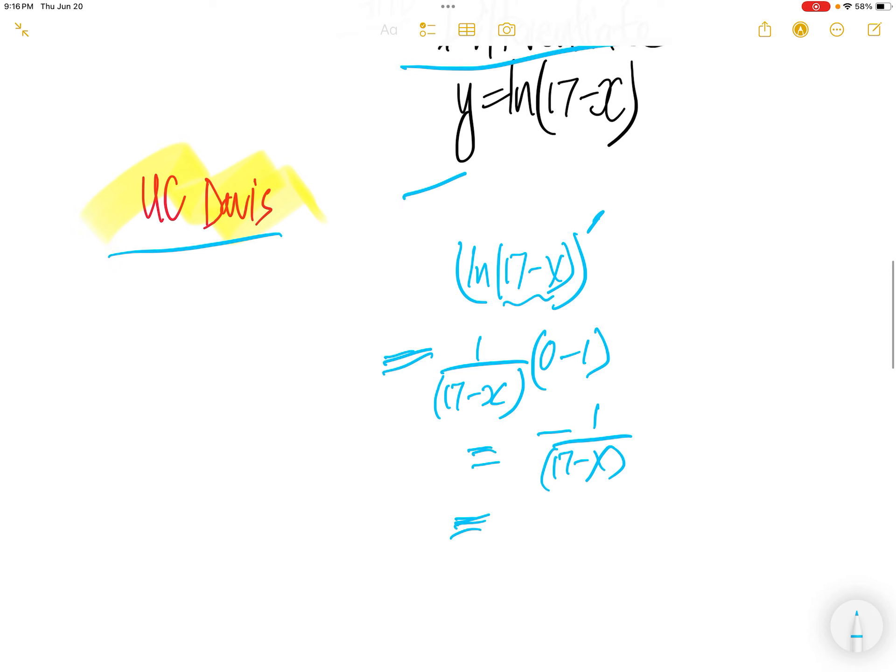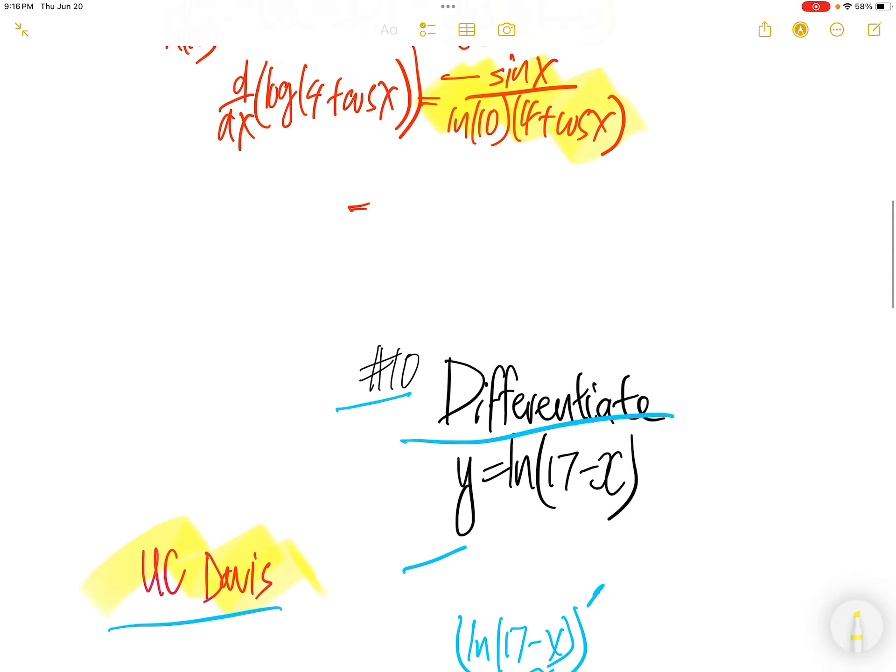Or if you want to move the negative inside, you get 1 over x minus 17. So the derivative of ln of 17 minus x is equal to this.